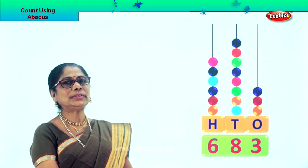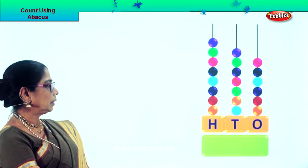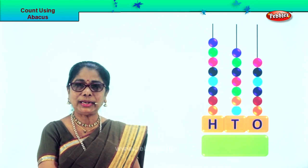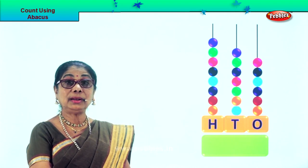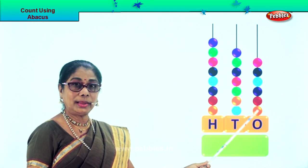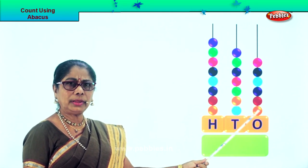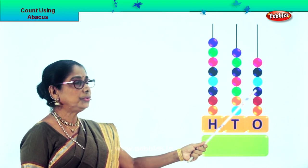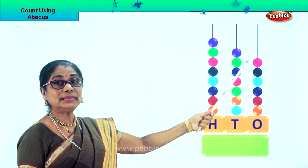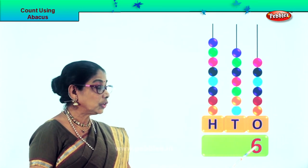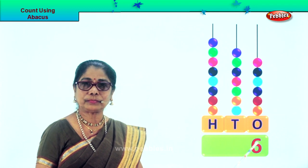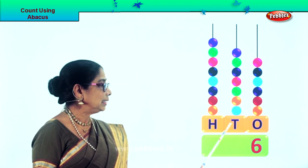Let's take a new sum. First we go to the 1s place and count: 1, 2, 3, 4, 5, 6. There are 6 beats, so we put down number 6 — that is 6 ones.